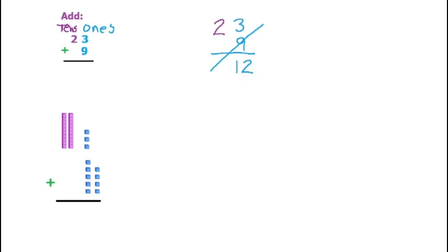So how would that look? We have the 9 blocks here added to the 3. So we've got 12 blocks down here. And we can't leave it like this, because you can't have greater than 9 in the ones.